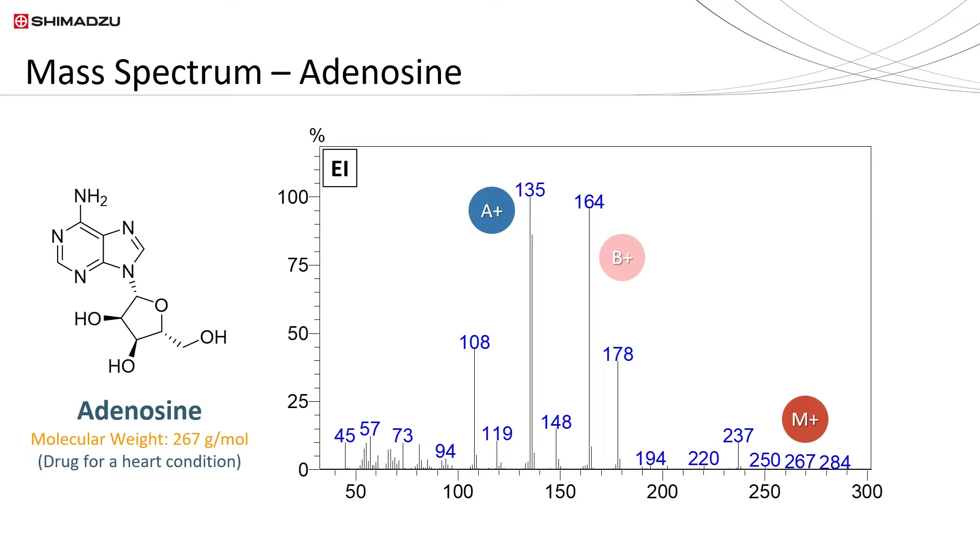In electron ionization, the molecular ion peak is usually low, while the fragment ions are higher depending on the compound structure.